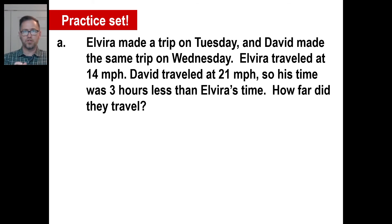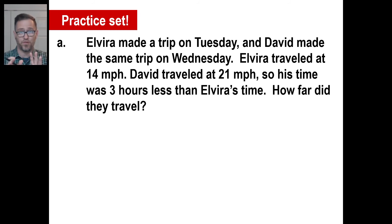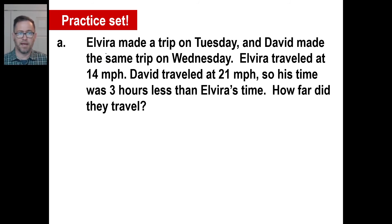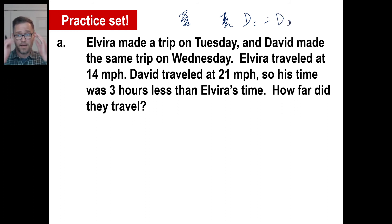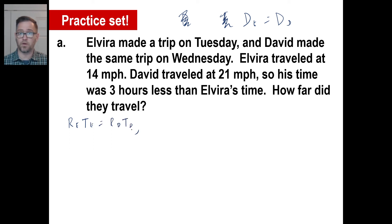Elvira made a trip on Tuesday. David made the same trip on Wednesday — so stop right there. Elvira's distance equals David's distance. We don't use Ds; we use Rs and Ts. So: rate of Elvira times time of Elvira equals rate of David times time of David. One equation down, three to go.